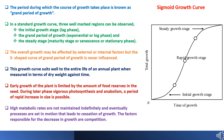Early growth of the plant is limited by the amount of food reserves in the seed. When the emerged seedlings develop an adequate root system and enough leaf surfaces to support vigorous photosynthesis and anabolism, a period of rapid increase in size is possible. High metabolic rates are not maintained indefinitely, and eventually processes are set in motion that lead to the cessation of growth. The factors responsible for the decrease in growth are competition for essential metabolites, growth substances, light, or the accumulation of inhibitors, toxic substances, and waste materials.